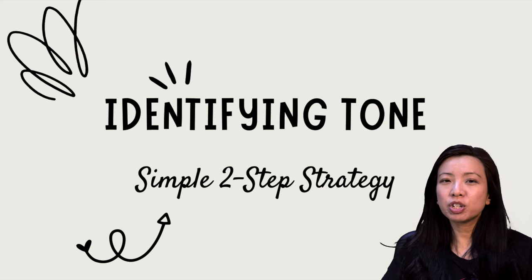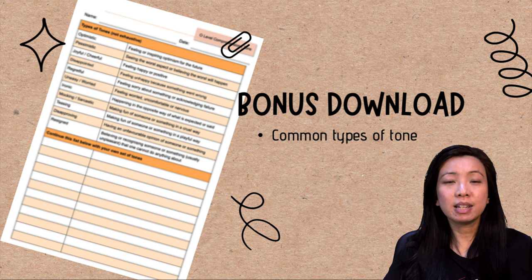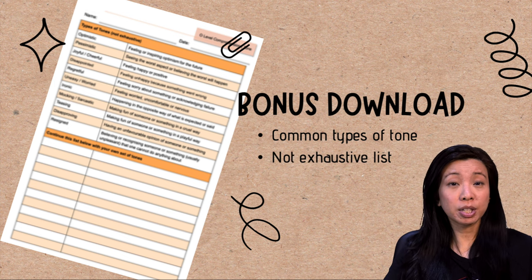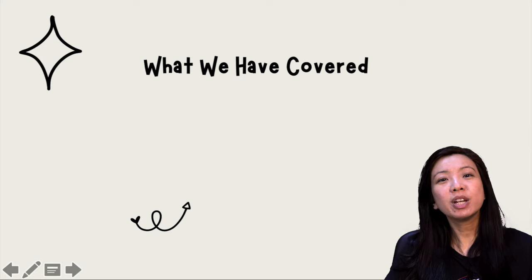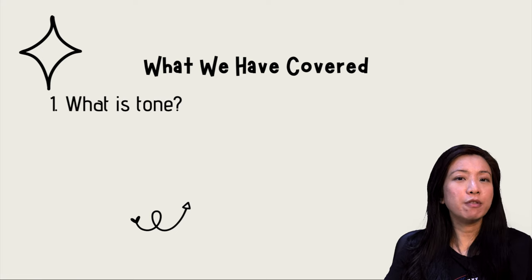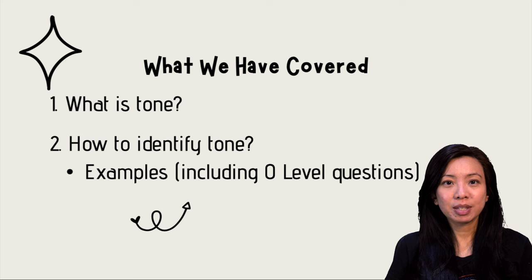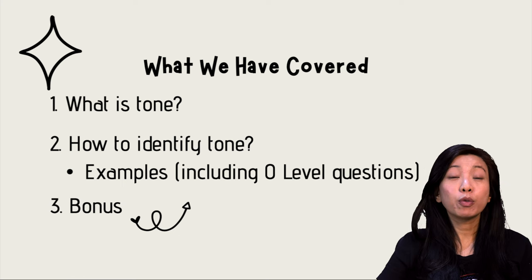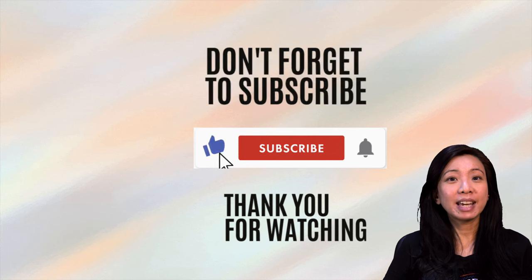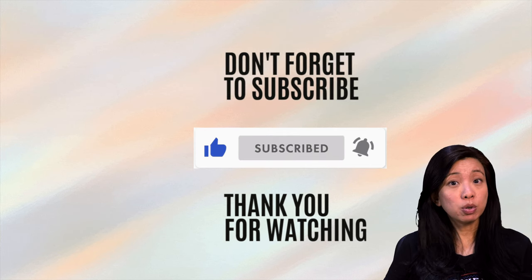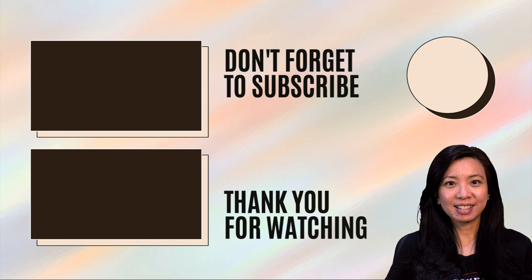So we've gone through many different examples using the two steps covered at the beginning of this video. I have compiled a short list of common types of tones — you can download the PDF from the link in the description box below. Remember, this list is not exhaustive, so you should add to it every time you come across a different type of tone. In today's video, we covered what tone is, a simple strategy on how to identify tone, and how to apply those two steps to various exam questions. Don't forget to download your common types of tone freebie. If you found this video useful, don't forget to like and subscribe, and please leave a comment below if you have any questions. Feel free to send us your video requests as well. See you in the next one!